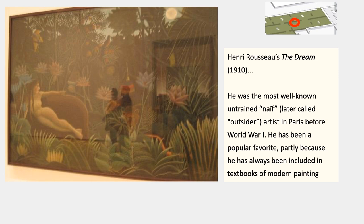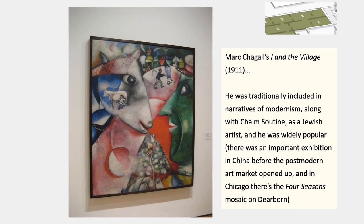Rousseau has for a long time been a popular favorite, partly because he's often been included in textbooks and introductions to modern painting, and also partly because there's a tourist industry that has produced a lot of reproductions of this and other paintings. On the far back wall to the left of the Rousseau was Marc Chagall's Eye and the Village from 1911. This is another artist traditionally not included in academic narratives of modernism, but very much included in popular narratives along with Chaim Soutine. They're both Jewish artists who've been very widely popular through the mid-20th century and also in other countries.